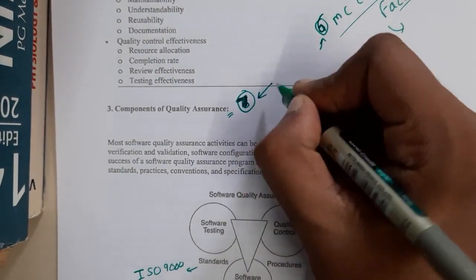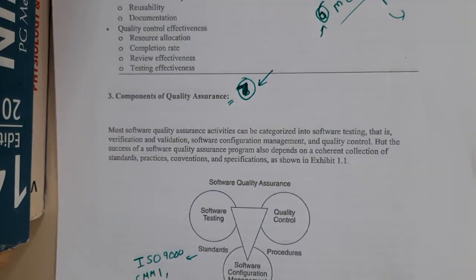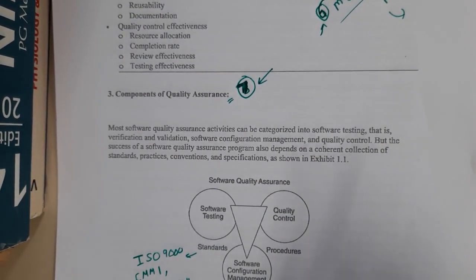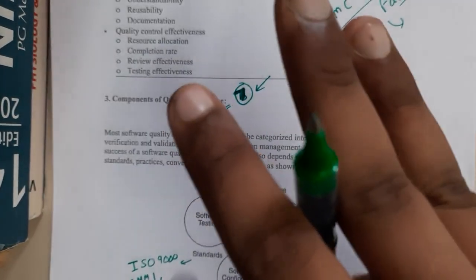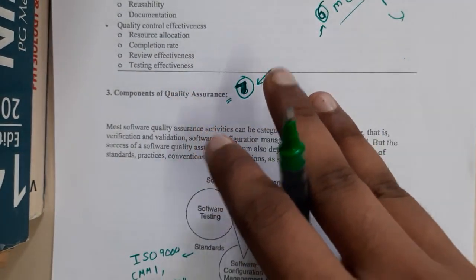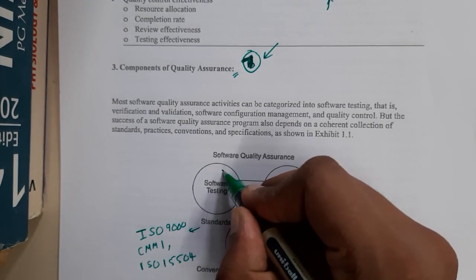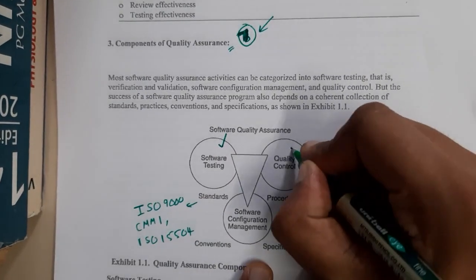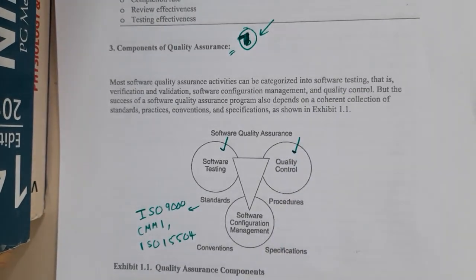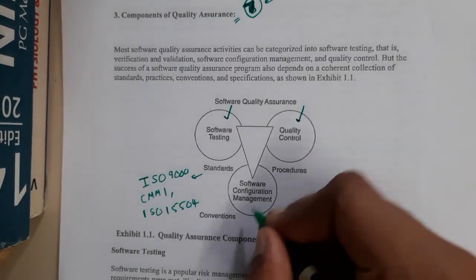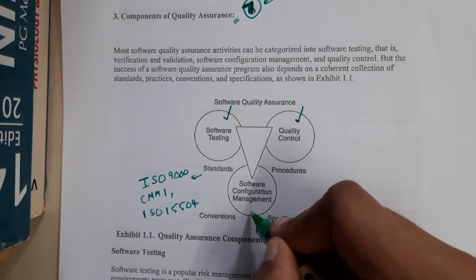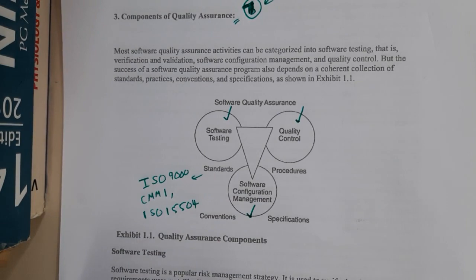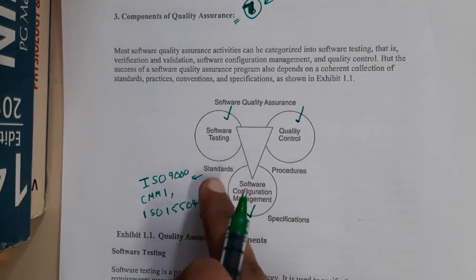So in this lecture let us go through the components of quality assurance. Basically, quality assurance has three main components. The first component is software testing, where proper testing and all those things should be done. Similarly, quality control is where you need to check the quality. And the third component is software configuration management.